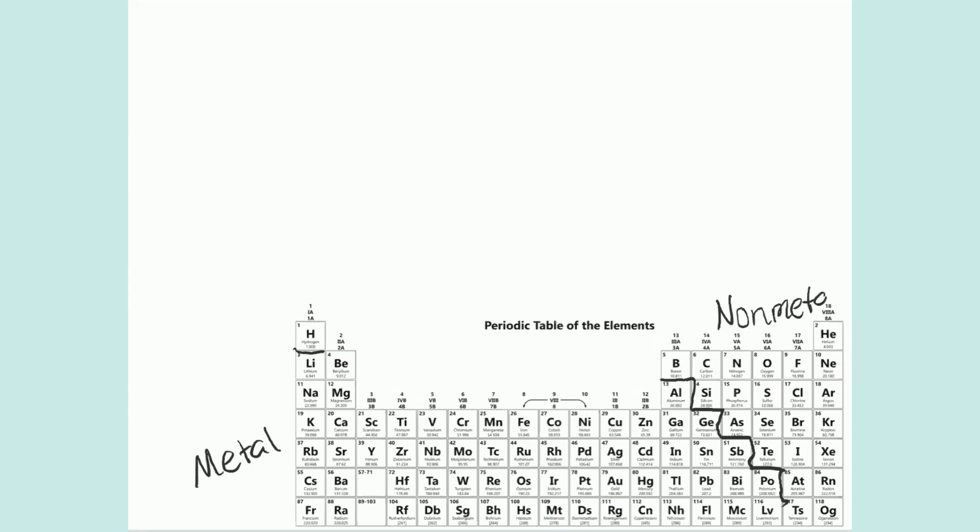When they form an ionic bond, the metal is going to give up an electron or transfer an electron to the non-metal, or more than one.